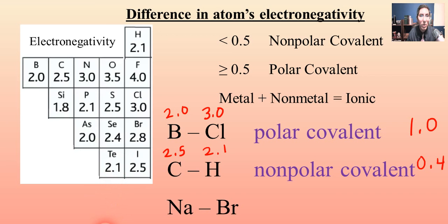Let's try one more example, sodium and bromine. Well, if we look at the periodic table, we can see that although bromine is a non-metal, sodium is a metal. So this is a metal and a non-metal. So that would make this an ionic bond. We don't even have to worry about the electronegativity here.